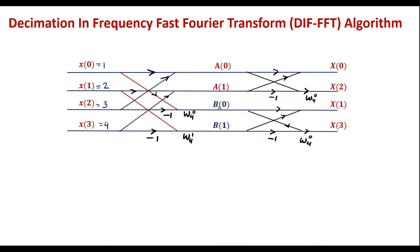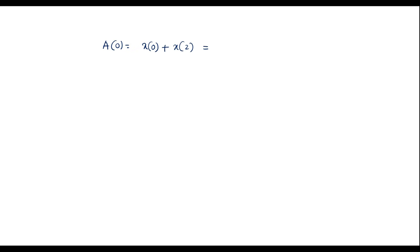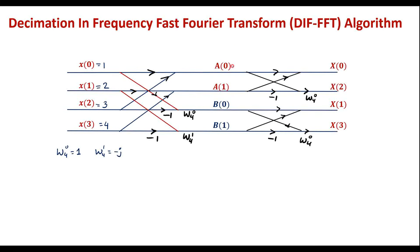Let A(0), A(1), B(0), B(1) be the intermediate outputs of the first stage. And X(0), X(2), X(1), X(3) are the DFT of the given sequence x(n). W4^0 = 1 and W4^1 = -j. A(0) = x(0) + x(2) = 1 + 3 = 4. So A(0) = 4.